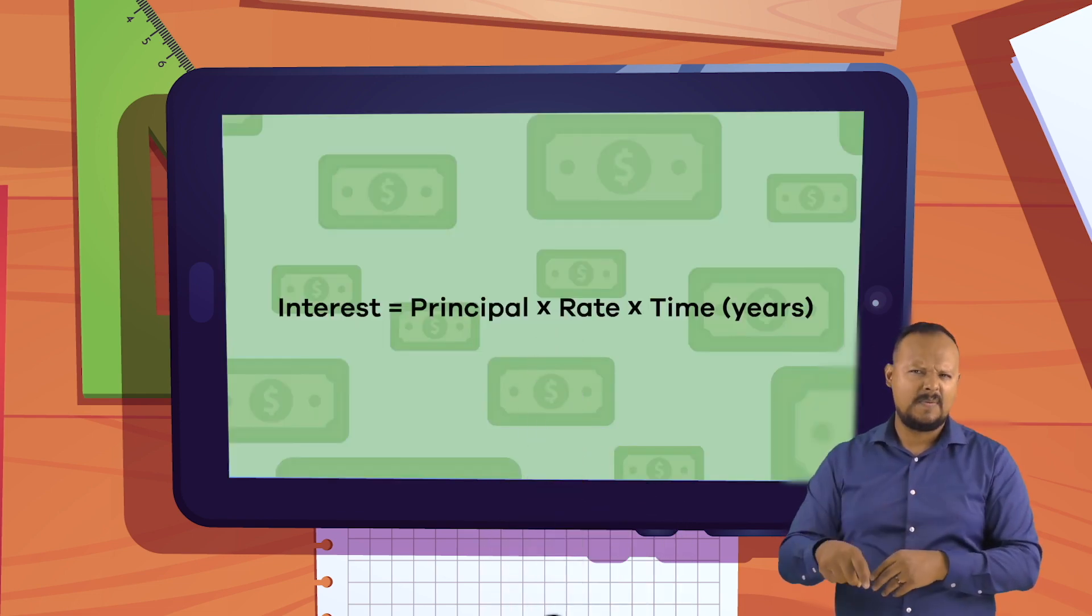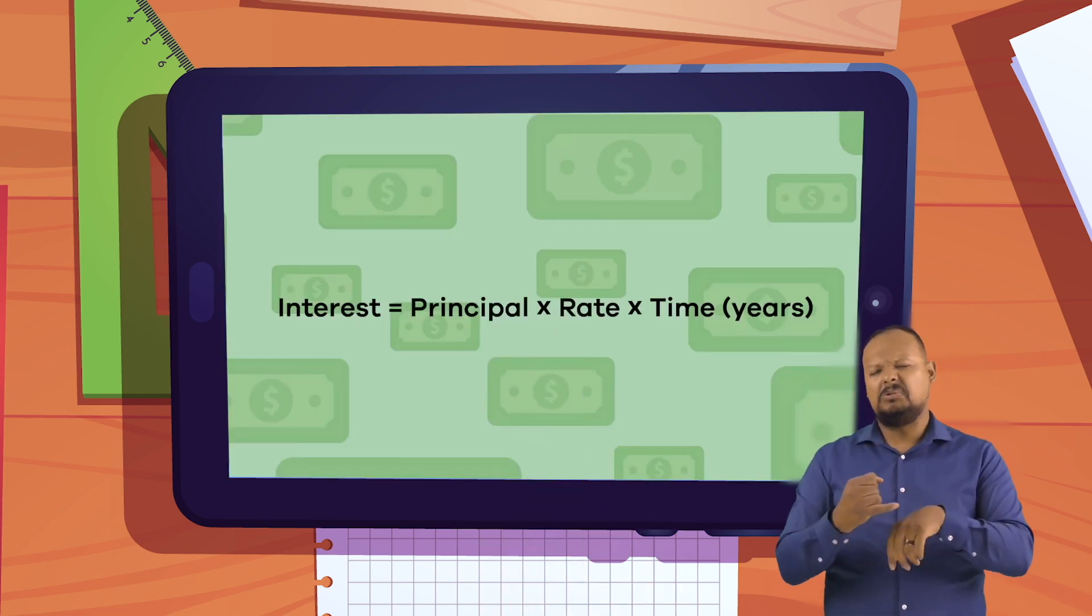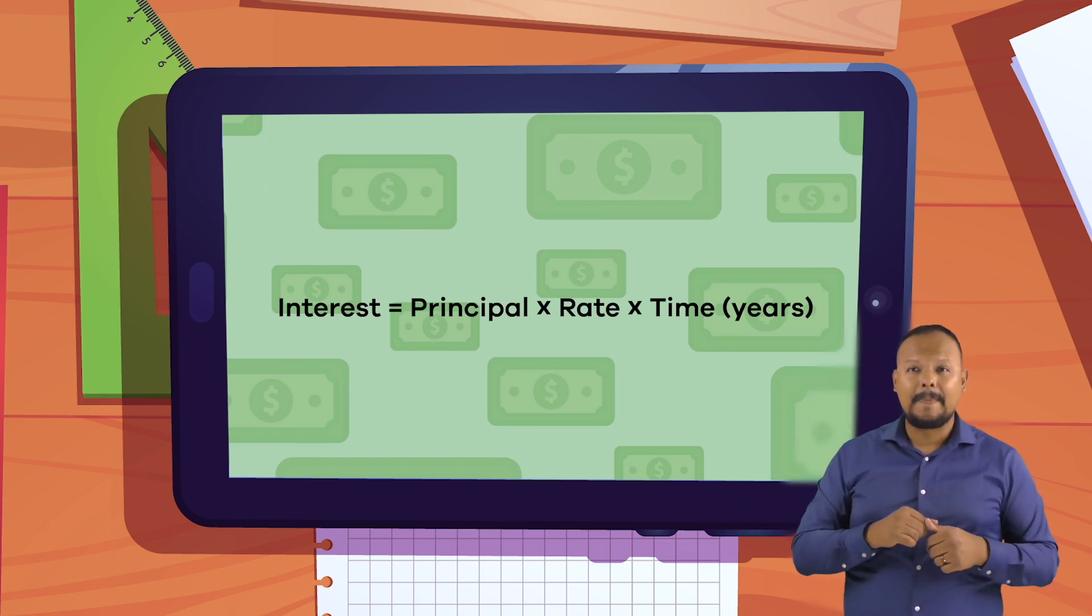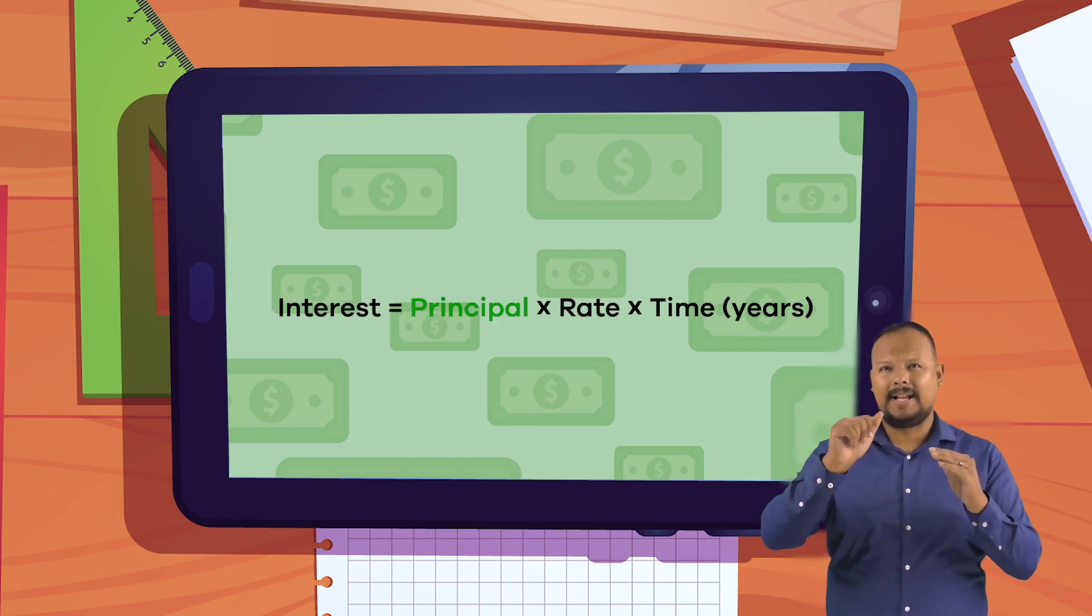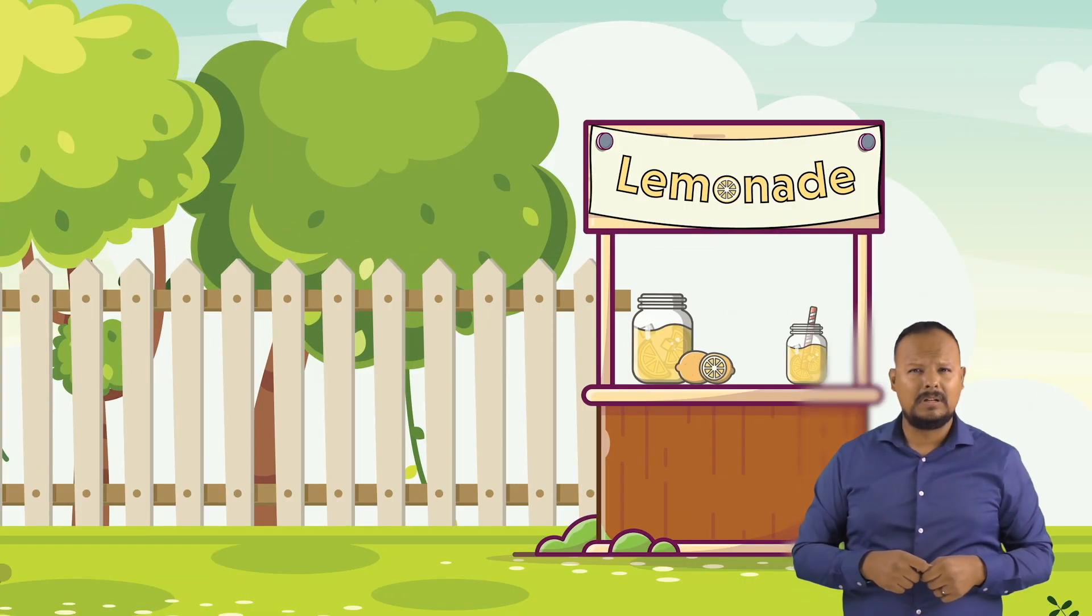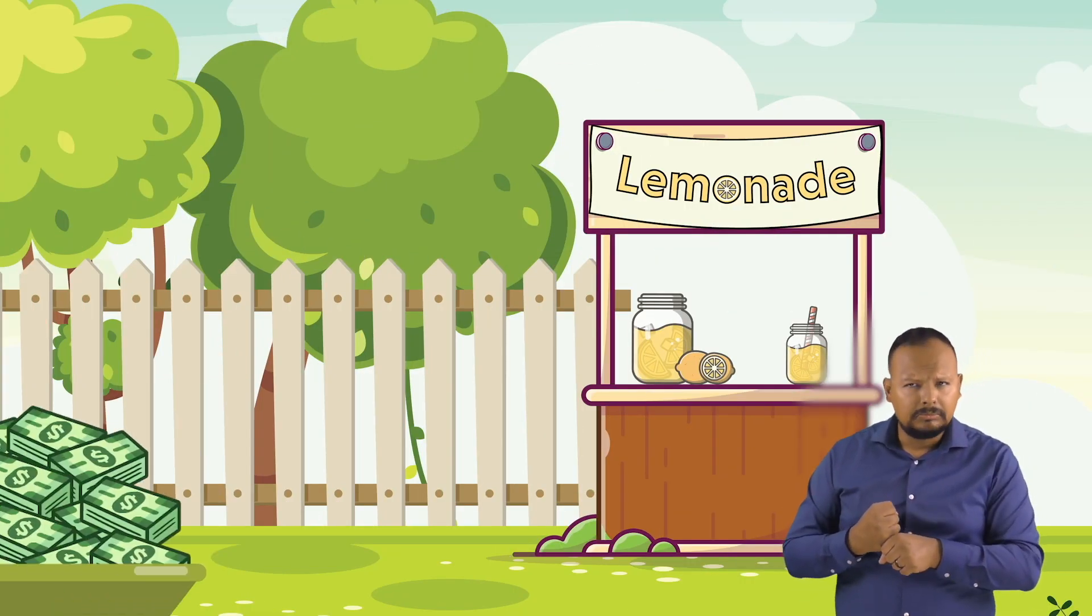Remember this mathematical equation for simple interest because we are going to use it in just a minute. Interest equals principal multiplied by rate multiplied by time in years. This is where our pal Frankie comes in.